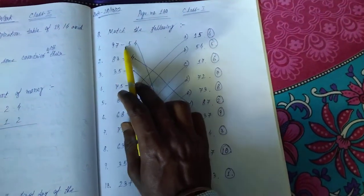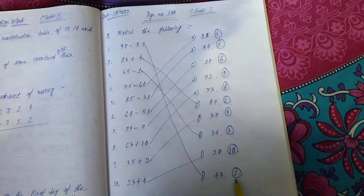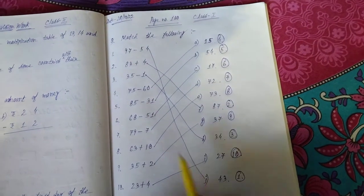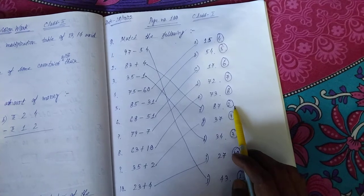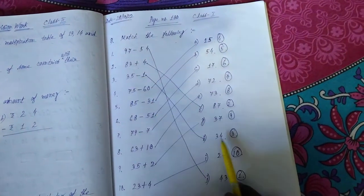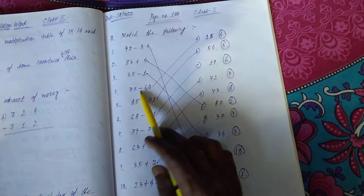83 plus 4, 87 is the answer. I have written here 2. 35 minus 1, 34 is the answer. 75 minus 60, 15 is the answer.